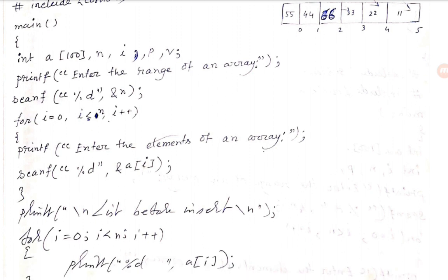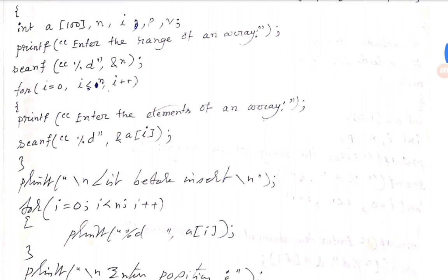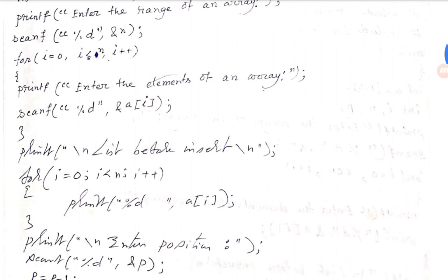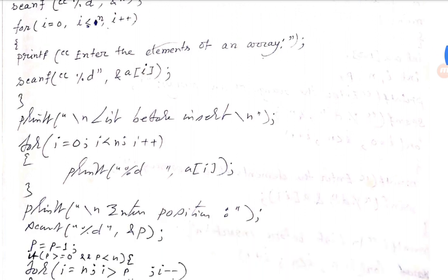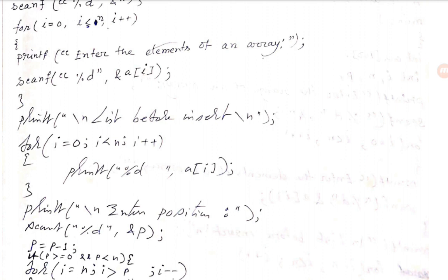Enter the range — array n. We store the range. Using a for loop, i goes from 0 to n. We enter and store elements into the array. Then we print the array.